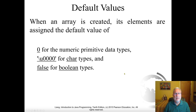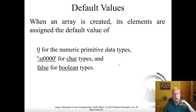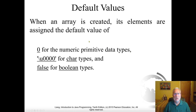Default values when you define an array: if it's a primitive data type like int or double, the default is 0. For character types, it's Unicode 0; false for booleans. I always initialize anyway, because when I'm creating an array I'll write an initialization routine. A lot of times I have to reinitialize it later — create the array, initialize it, process it, then start over again. So I don't rely on the default values.